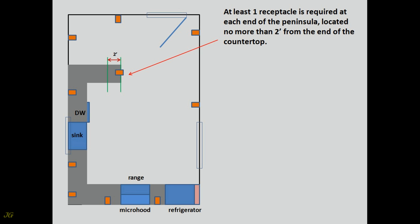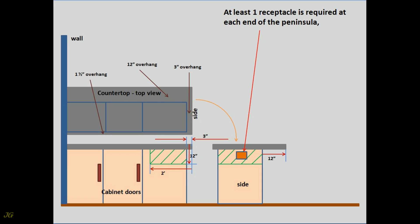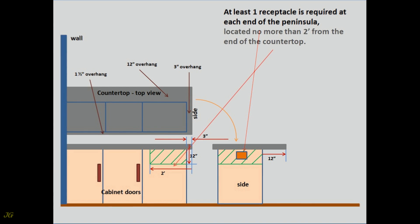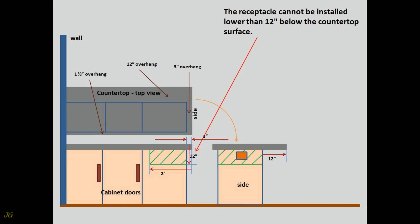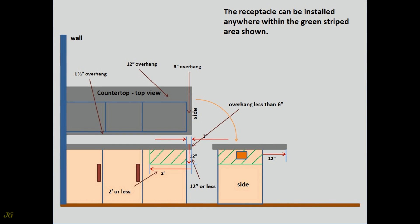At least one receptacle is required at each end of the peninsula, located no more than 2 feet from the end of the countertop. The receptacle cannot be installed lower than 12 inches below the countertop surface, and cannot be installed below a countertop if the countertop extends more than 6 inches from the base surface. The receptacle can be installed anywhere within the acceptable area shown.